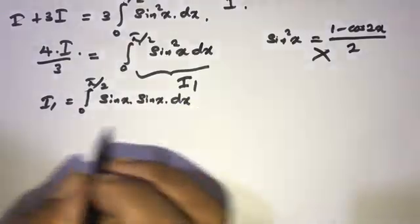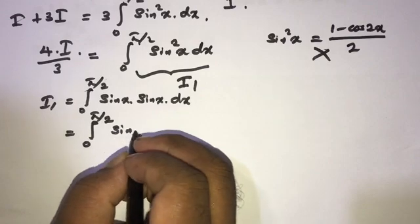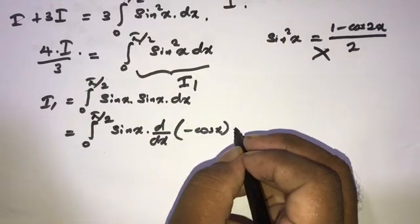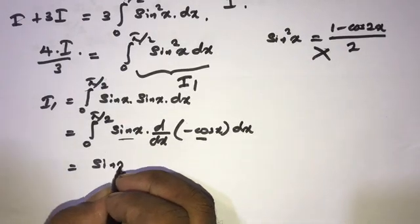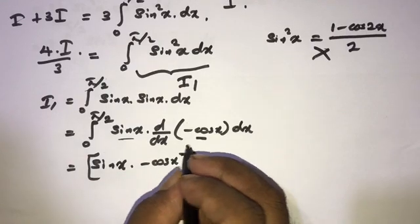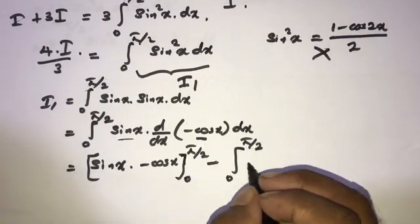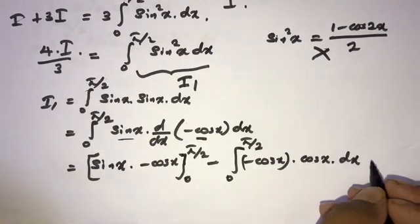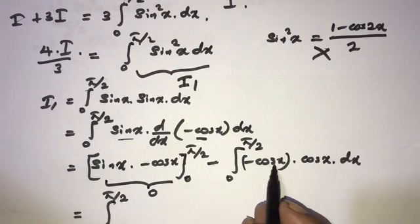We can write sine squared x as sine x times sine x dx. Integrating by parts again, from 0 to 5π/2, we rewrite the first function sine x, then d/dx, and the integration of the second function sine x is minus cos x dx. The product of these two functions gives sine x times minus cos x, evaluated from 0 to 5π/2, minus the integral from 0 to 5π/2. Rewrite minus cos x and the derivative of the first function, cosine x dx.